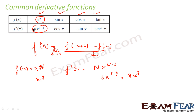Similarly: if f(x) = sin x, then f'(x) = cos x. If f(x) = cos x, then f'(x) = −sin x — please note it is minus sin x. If f(x) = tan x, then f'(x) = sec²x. So to summarize: for f(x) = xⁿ, f'(x) = n·xⁿ⁻¹; for f(x) = sin x, f'(x) = cos x; for f(x) = cos x, f'(x) = −sin x; and for f(x) = tan x, f'(x) = sec²x.